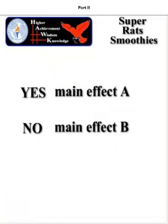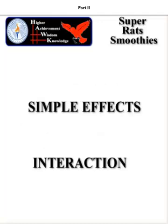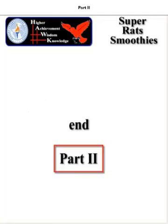So: yes main effect A, no main effect B, and there is interaction because we saw the crossing of the means. Whenever you have interaction, you do not look at the main effects — you look at the simple effects. That's the important thing: simple effects whenever you have interaction. And that's going to be the end of part 2, so stay tuned for part 3.